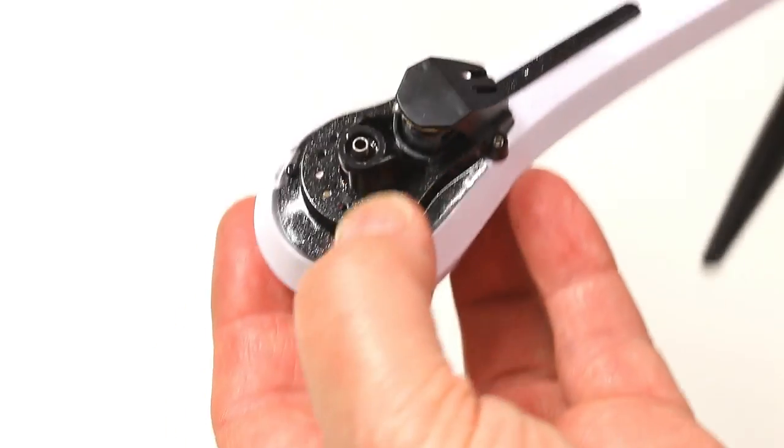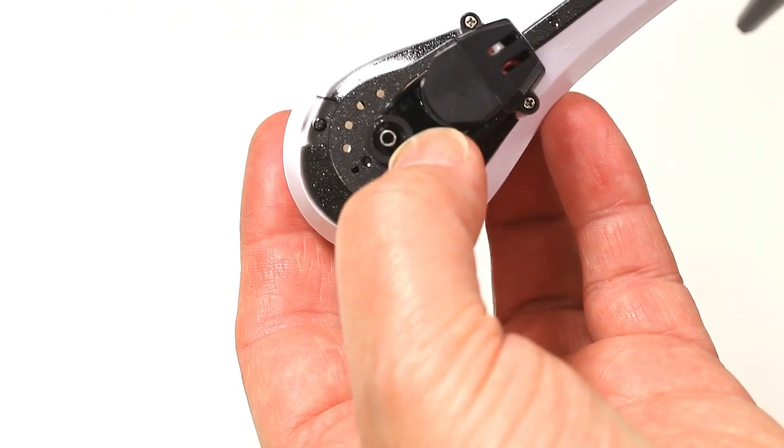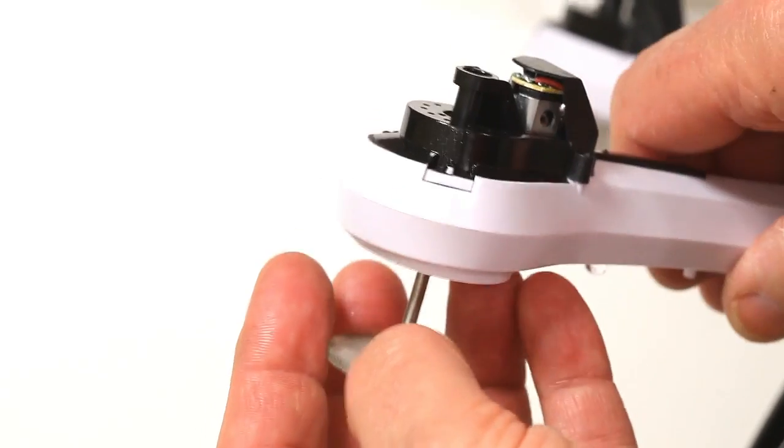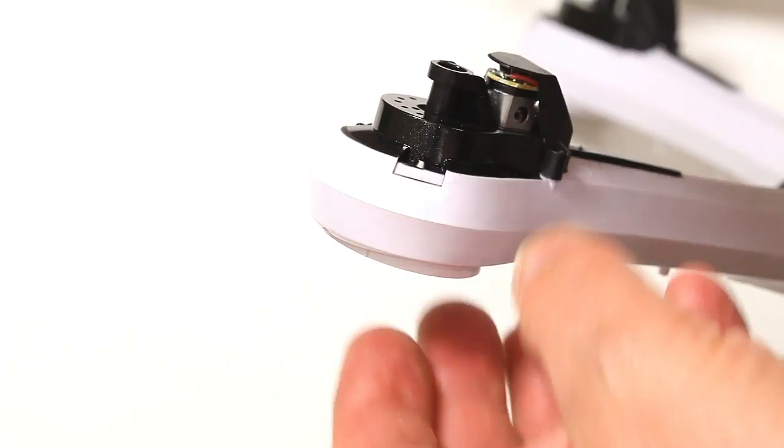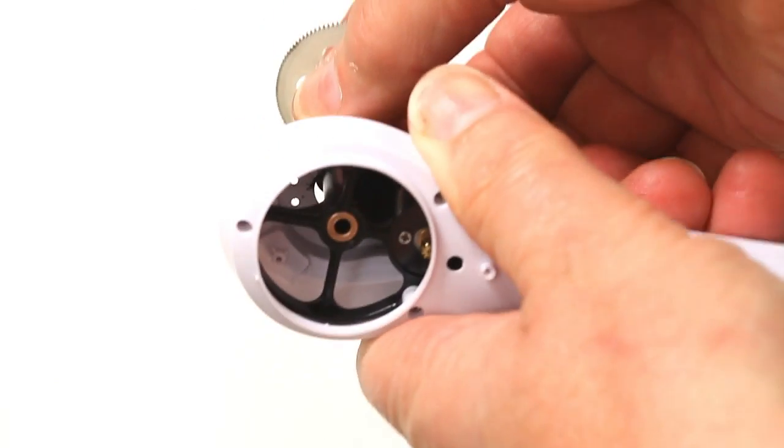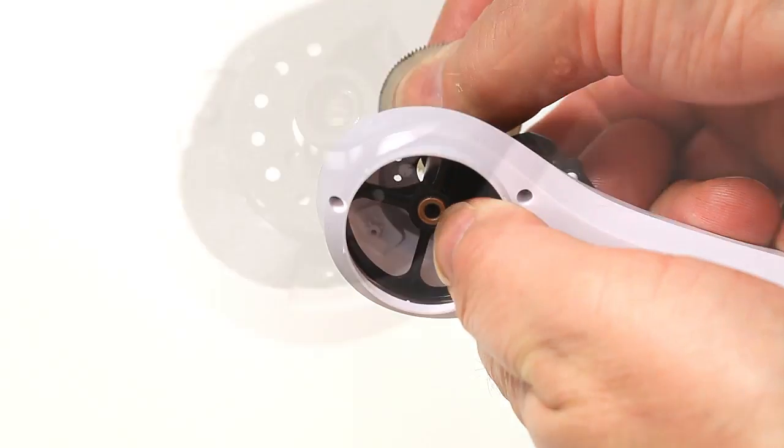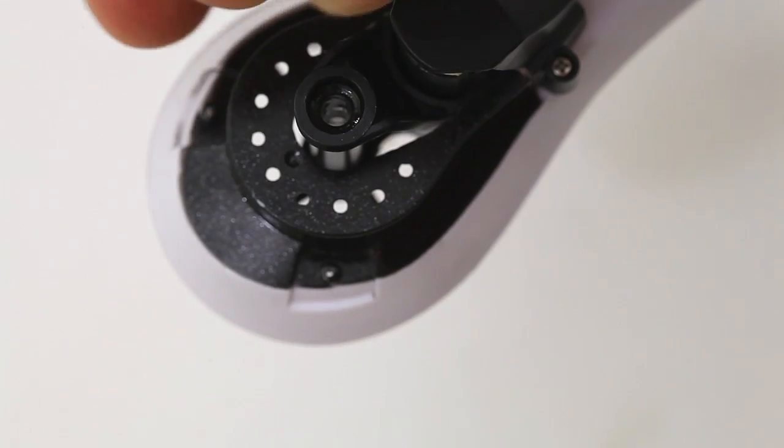That way you're not wrenching the plastic, so it might be a better way of doing it. Just remove the gear shaft and do the same the other way around. Then we simply get the bearing.